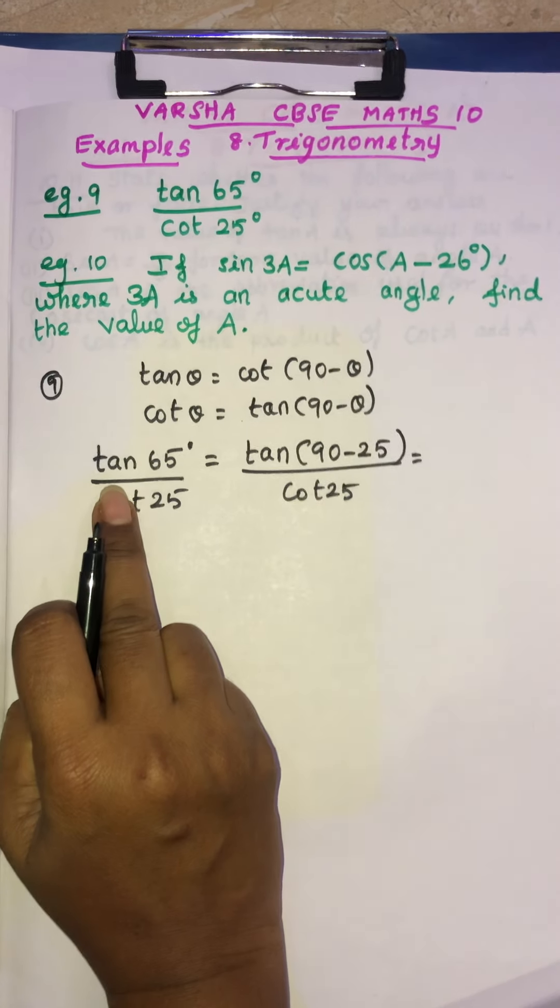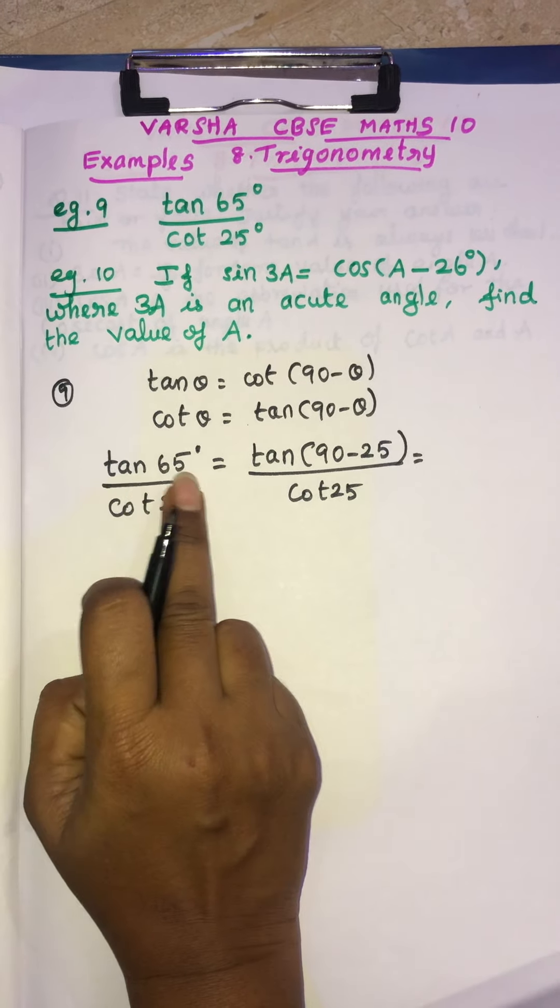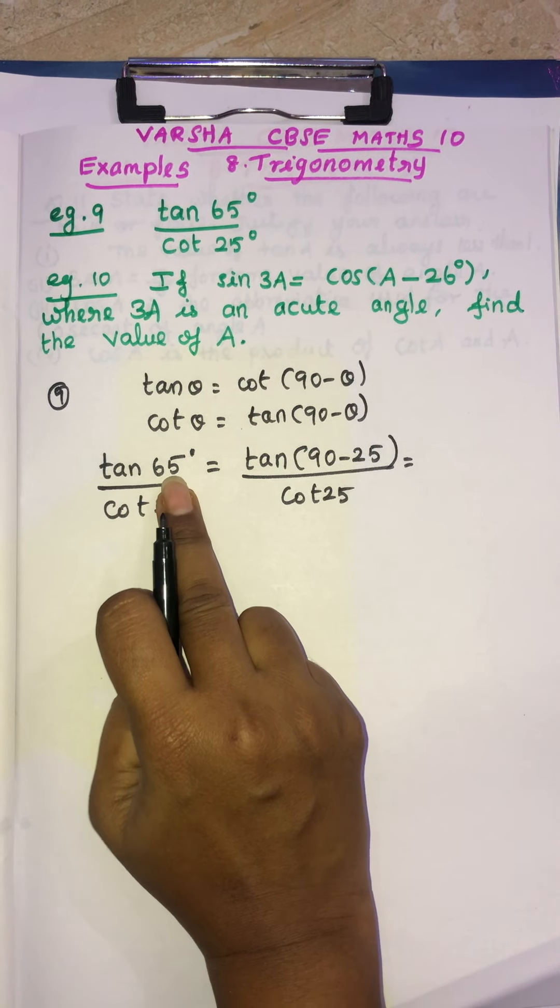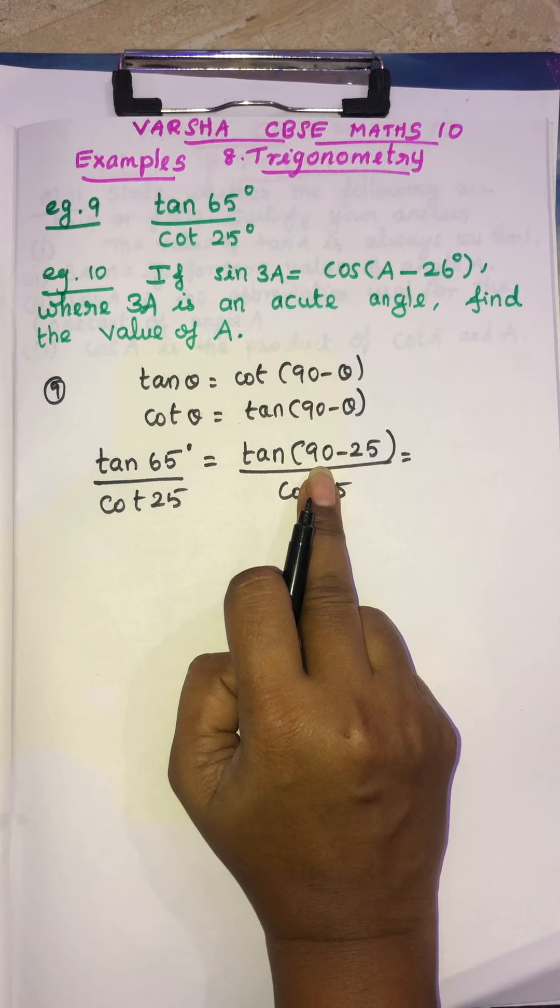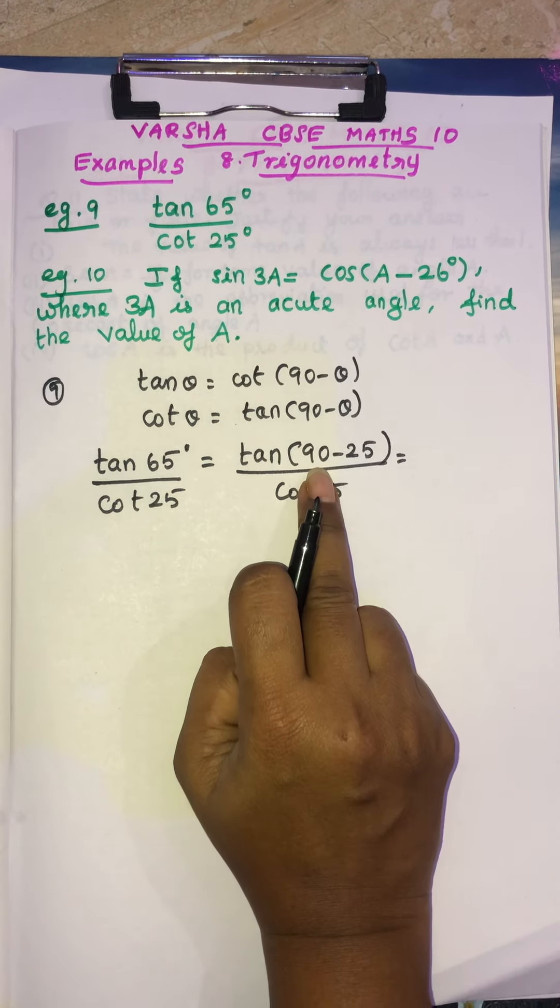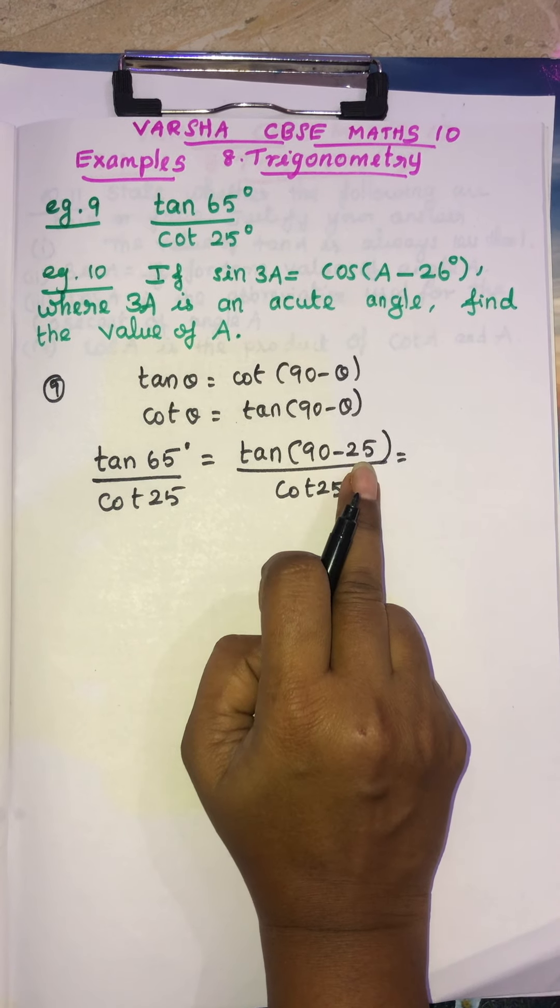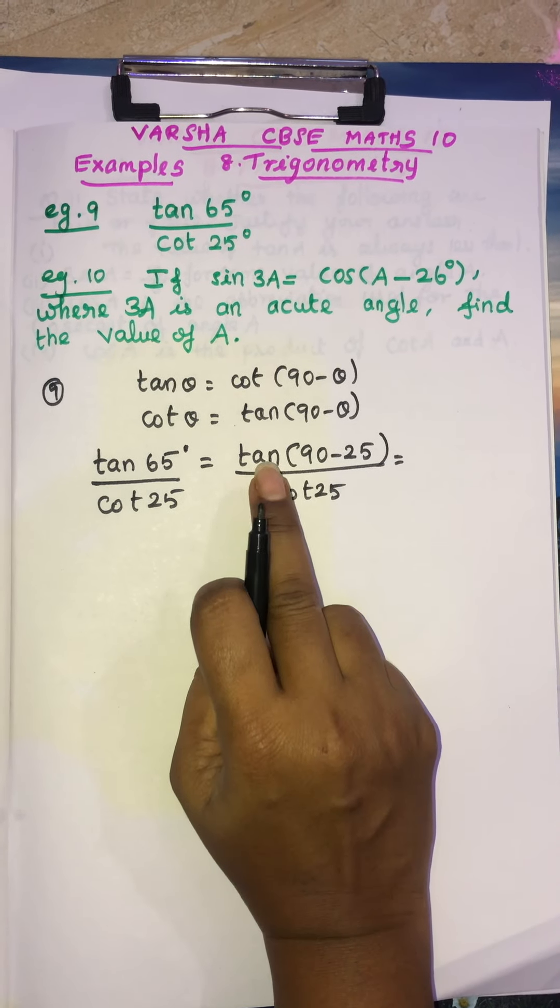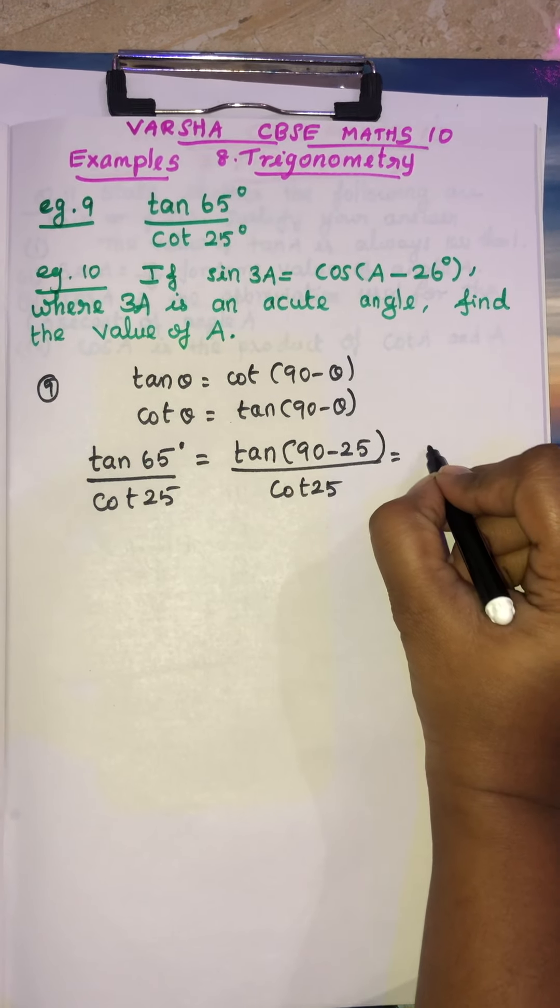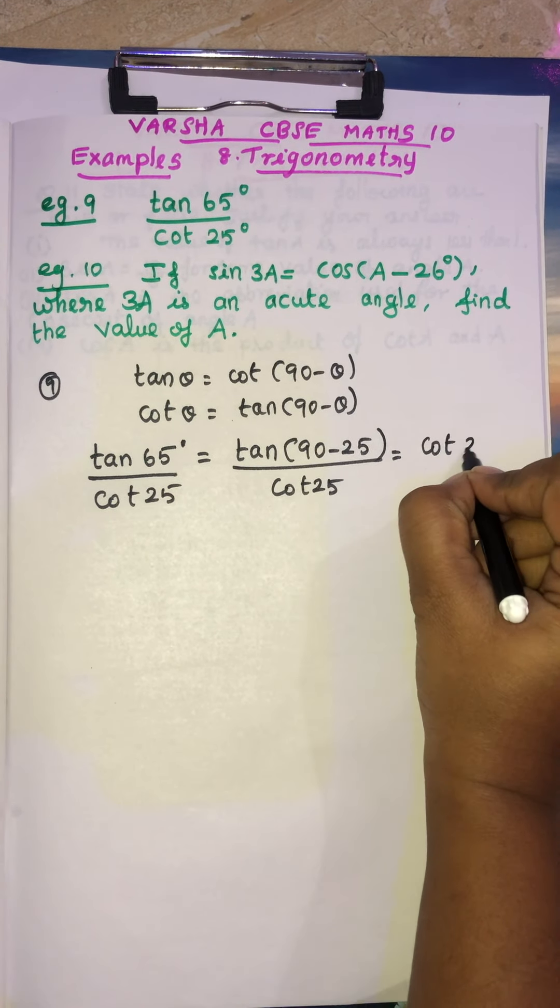So see what is the first step? Tan 65. So tan is that 65 write like 90 minus 25. 65 you can write like 90 minus 25. So this is tan 90 minus theta. Tan 90 minus theta will be cot theta. So this is cot 25.